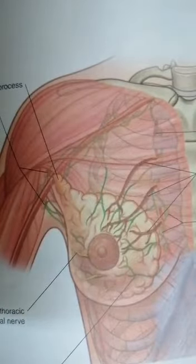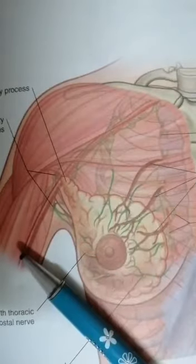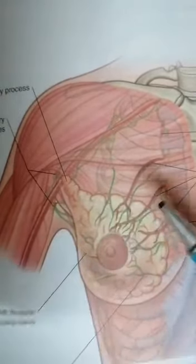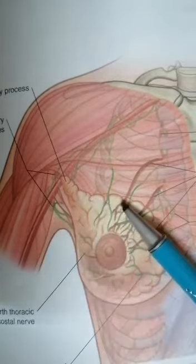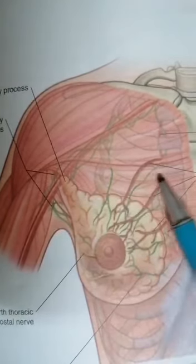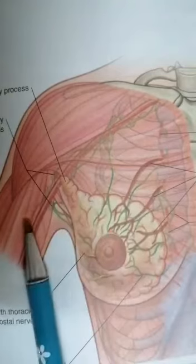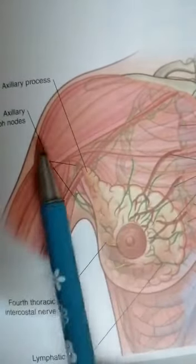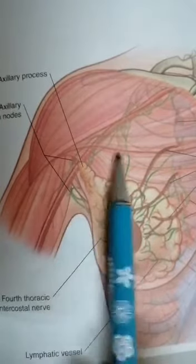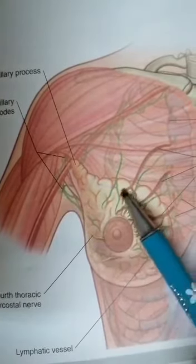The blood supply is simple to remember because the breast is in the area of the axilla, which we have discussed in a separate video. The axillary artery and its branches — including the thoracoacromial artery from the second part — mostly supply the breast tissue. The internal thoracic artery from the thoracic region supplies the medial side of the breast, while the branches of the axillary artery supply the lateral side and the axillary tail of the breast. This axillary process is the lateral extension of the breast.